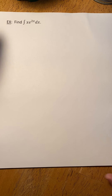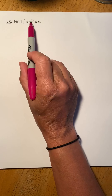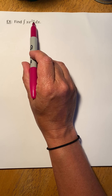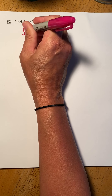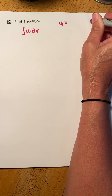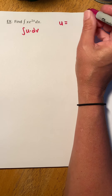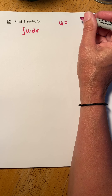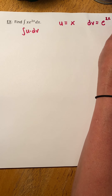First problem: let's show the process of integration by parts. I'm going to integrate x·e^(2x) with respect to x. Substitution would not work here because if we let u equal 2x, the derivative of 2x is 2, but we have that extra x out front. So we'll use parts. I'm going to let u equal x, and then dv is going to be what's left: e^(2x) dx.